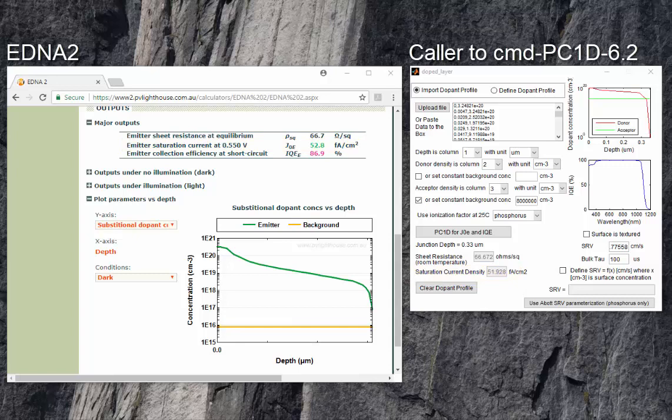which is a measure of recombination in the emitter, and they both evaluate the IQE, the quantum efficiency or the ability for these emitters to convert absorbed light into short-circuit current.